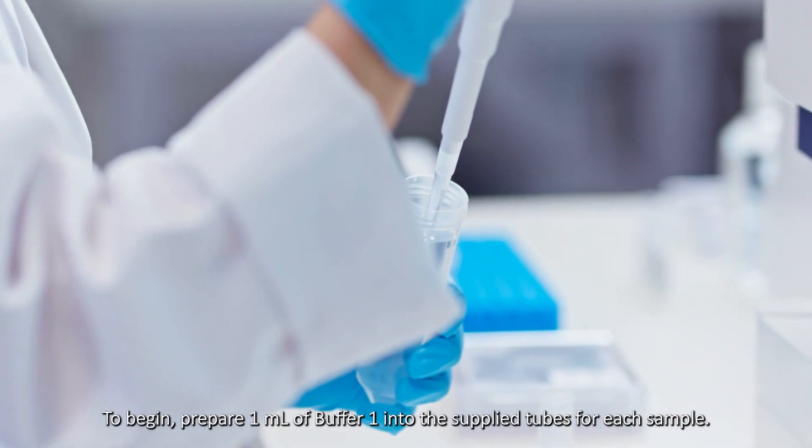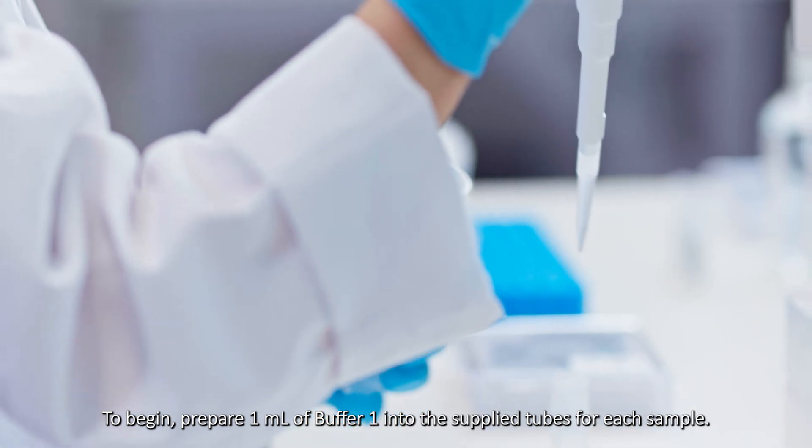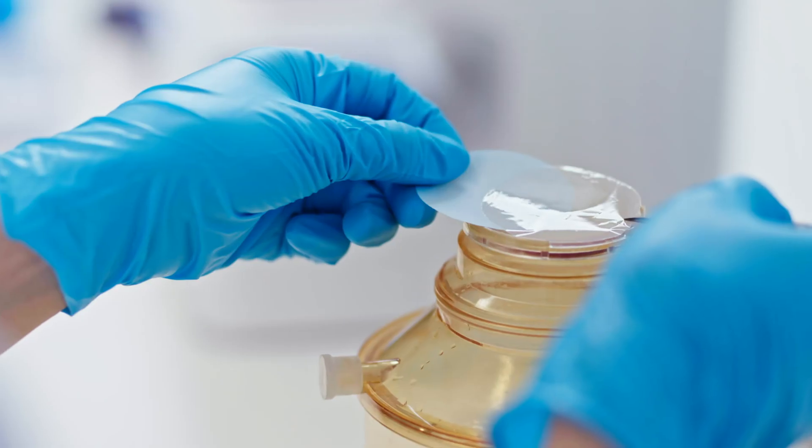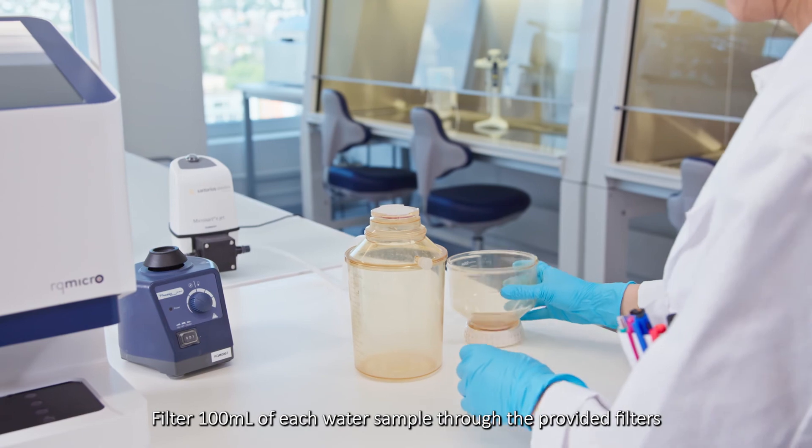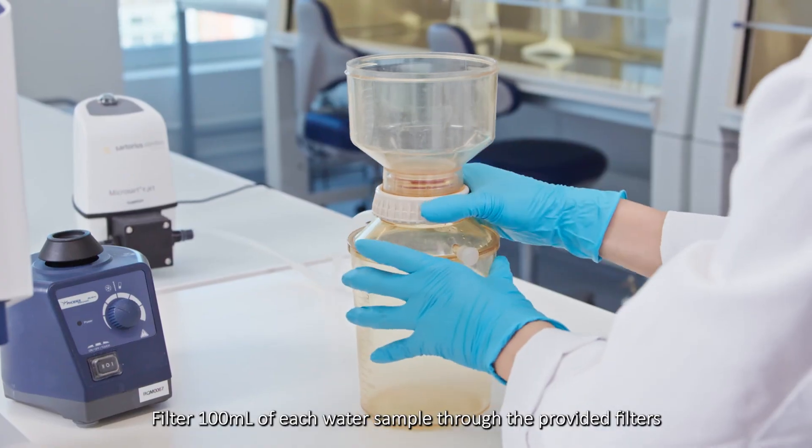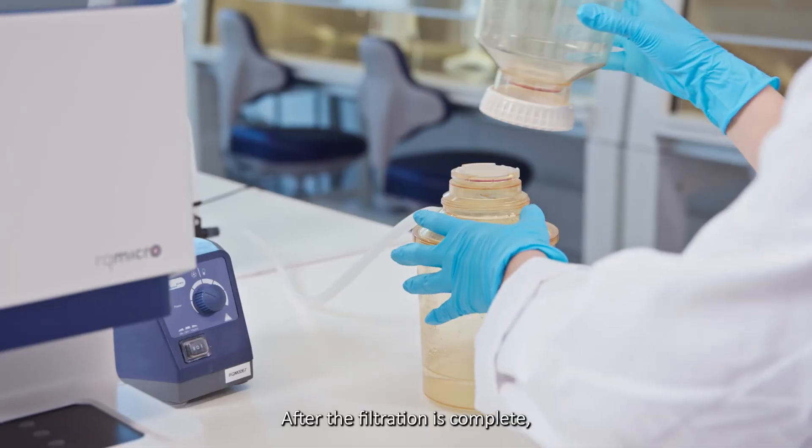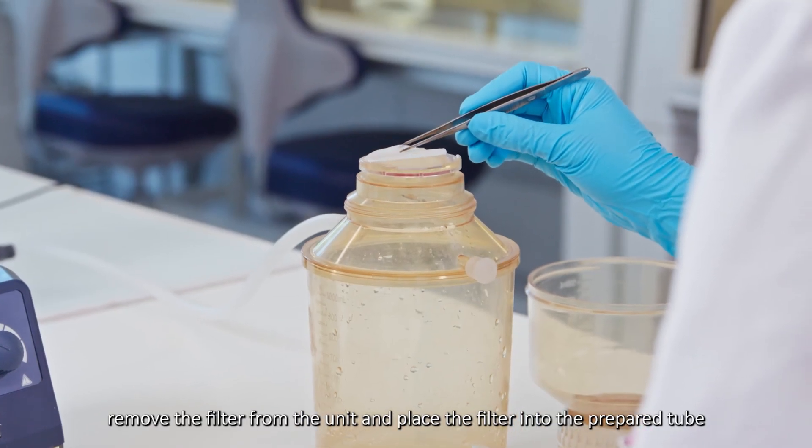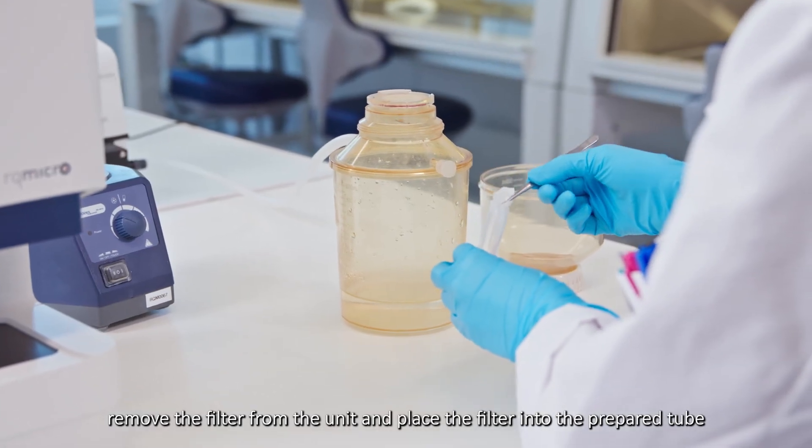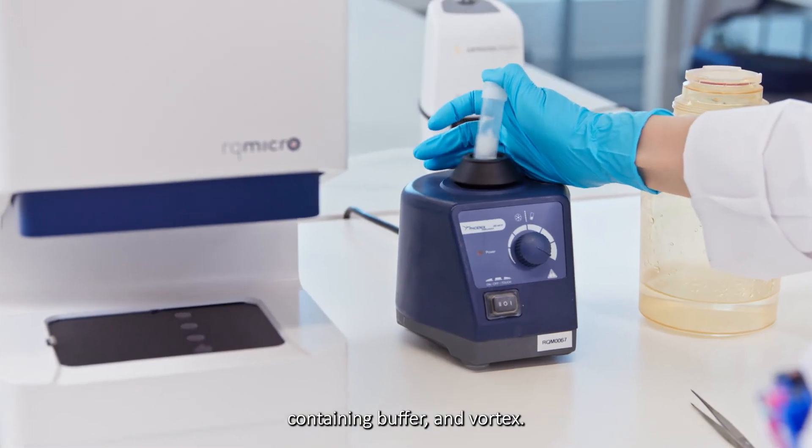To begin, prepare one milliliter of buffer 1 into the supplied tubes for each sample. Filter 100 milliliters of each water sample through the provided filters using a vacuum filtration unit. After the filtration is complete, remove the filter from the unit and place the filter into the prepared tube containing buffer and vortex.